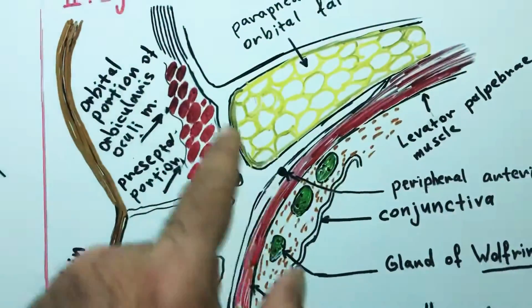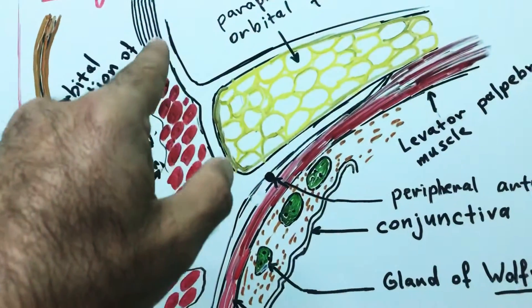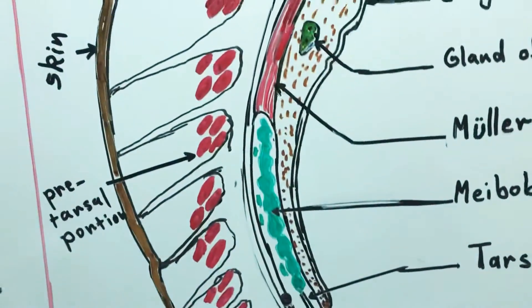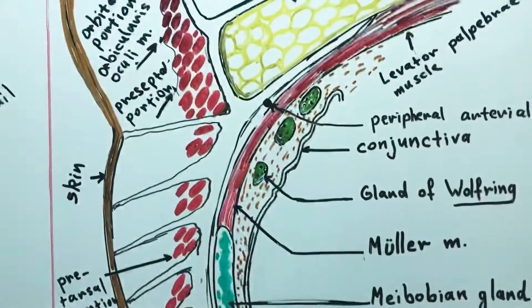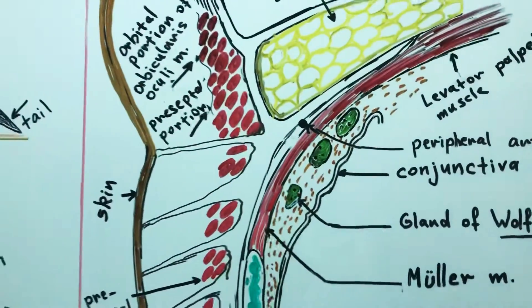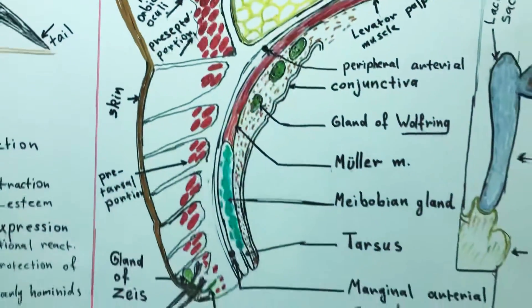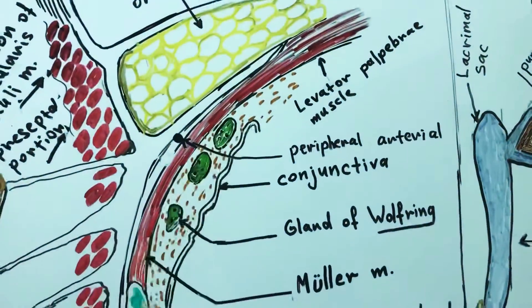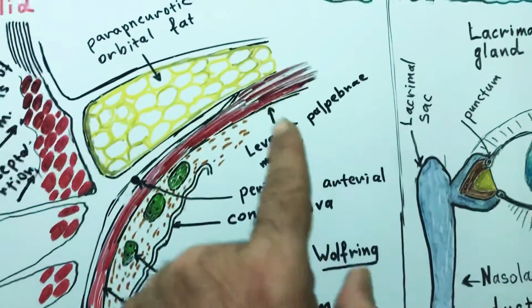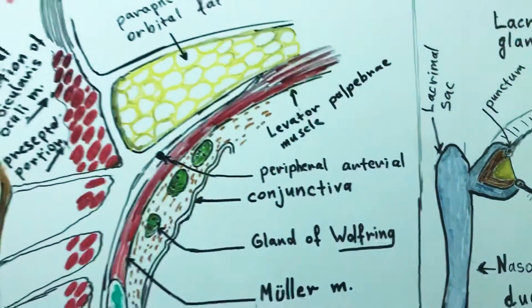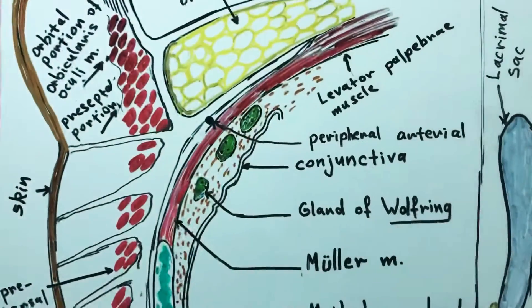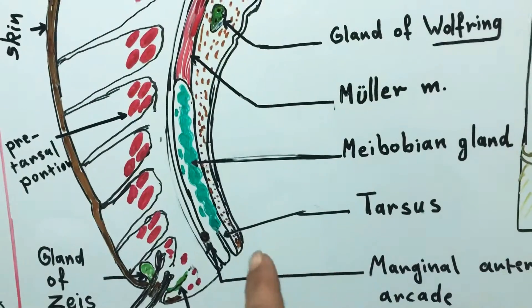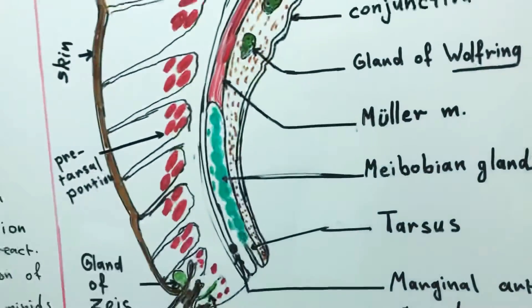It is originated from the medial palpebral ligament and is inserted in the outer corner of the eyelid. This muscle acts involuntarily to close the eye during sleeping or during blinking. The other muscle is the levator palpebrae. It originates as an aponeurosis in the eye socket and then is burdened to the ridge or to the corner of the tarsus.